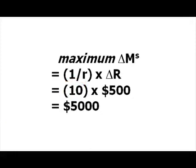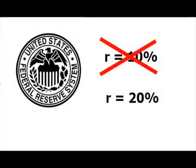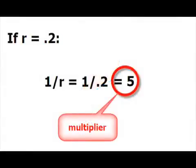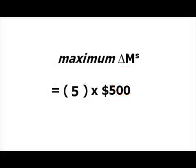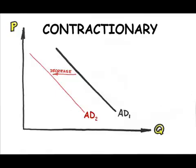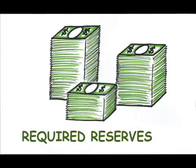What if the Fed increases the required reserve ratio to 20%? Technically, the Monetary Control Act of 1980 allows only a range from 8% to 14%, but using 20% hypothetically: with a required reserve ratio of 0.2, the multiplier is now 1 over 0.2, or 5, so the maximum change is 5 times $500, or $2,500. Raising the reserve requirement is contractionary monetary policy, since the overall possible change is half what it was before. A higher reserve ratio means banks are legally required to hold onto more reserves, leaving less to lend out.